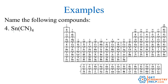Sn(CN)4: Sn is tin. Tin is not in group 1, not in group 2, and not in the magic triangle, so it will need a Roman numeral. CN is cyanide — one of the polyatomics you just have to learn — and it has a 1− charge. We have four cyanides, giving a total of 4−. The tin must add up to 4+, and there's only one of them, so it must be tin(IV). The name is tin(IV) cyanide.